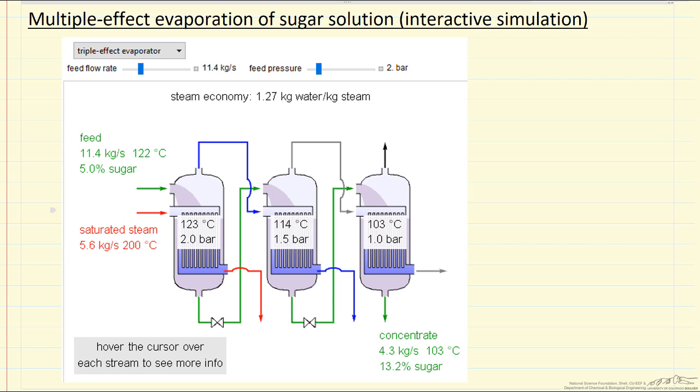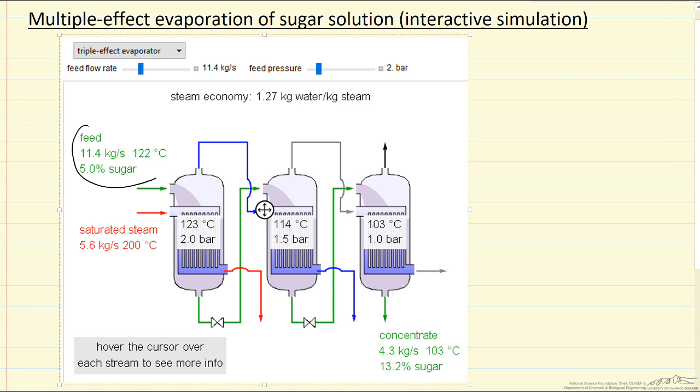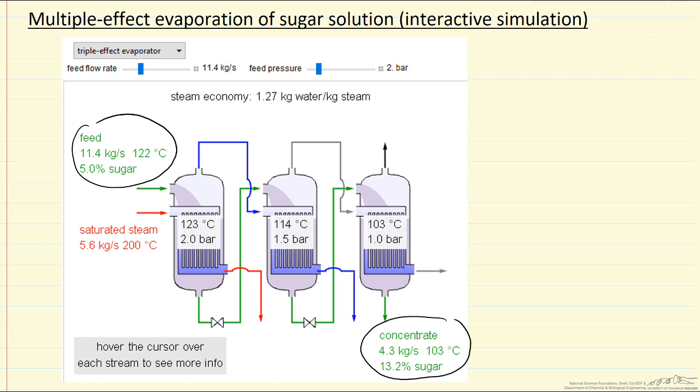I'm going to describe multiple effect evaporation. The idea is we take a feed, shown in green here, a five weight percent sugar solution, and concentrate the sugar. As we go through the stages, we end up with 13.2% sugar solution by evaporating some of the water.